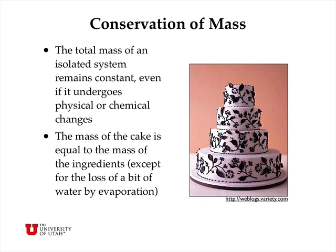We'll take conservation of mass first. The total mass of an isolated system remains constant even if it undergoes physical or chemical changes. A simple example is that the mass of a cake is equal to the mass of its ingredients, even though they've undergone significant chemical change. In an isolated chemical system undergoing a reaction, you can change substances from one thing to another, but the total mass remains exactly the same before and after.